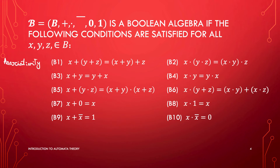Then we have properties B3 and B4, which refer to the same property: addition and multiplication are commutative. x plus y equals y plus x, and x multiplied by y equals y multiplied by x. So these are about commutativity.